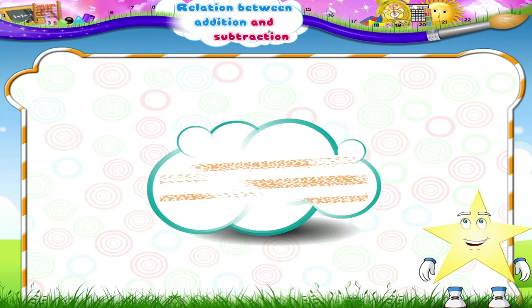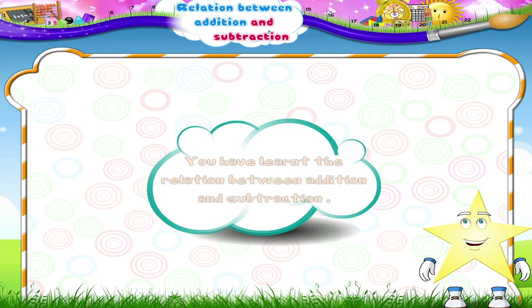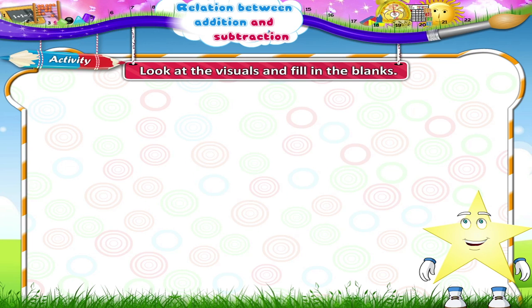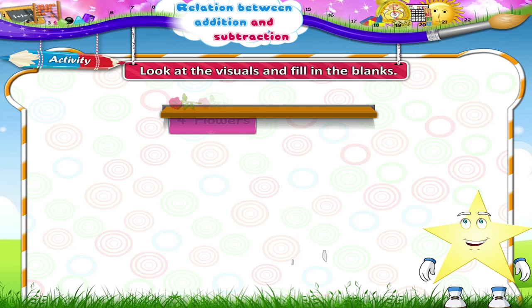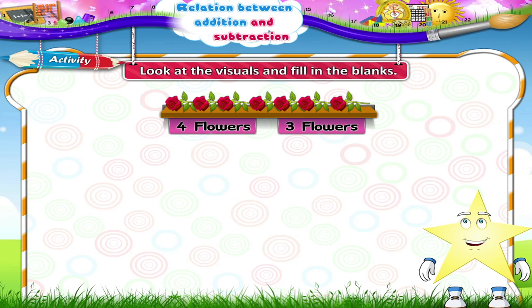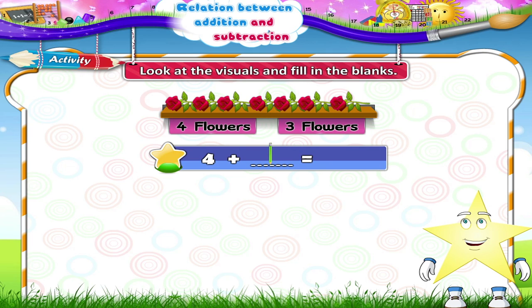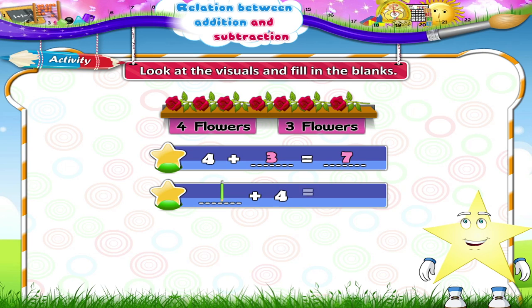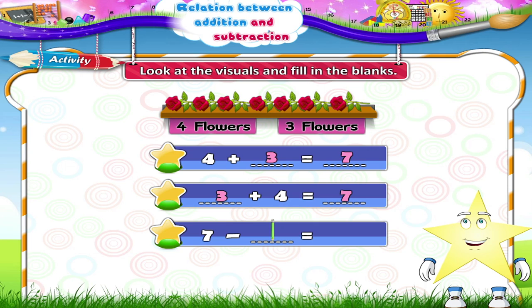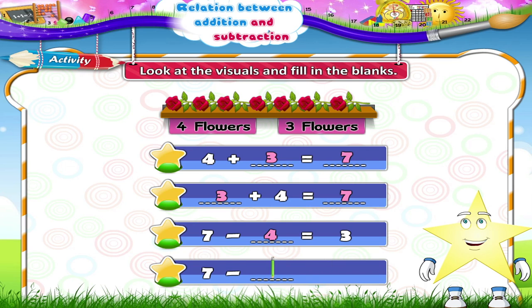Now that you have learnt the relation between addition and subtraction, let's do this activity together. Look at the visuals and fill in the blanks. 4 flowers and 3 flowers. 4 plus blank equals blank. 4 plus 3 equals 7. Blank plus 4 equals blank. 3 plus 4 equals 7. 7 minus blank equals 3. 7 minus 4 equals 3.